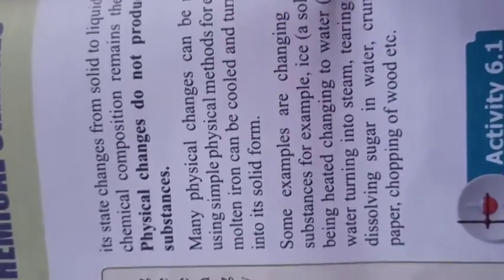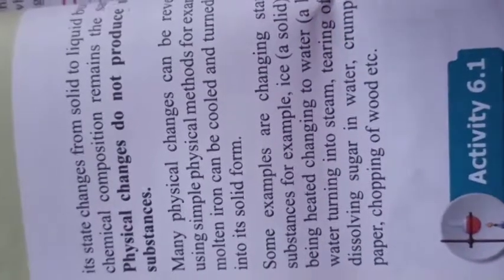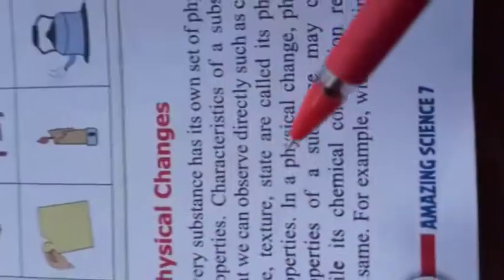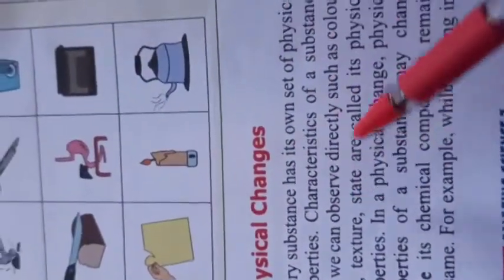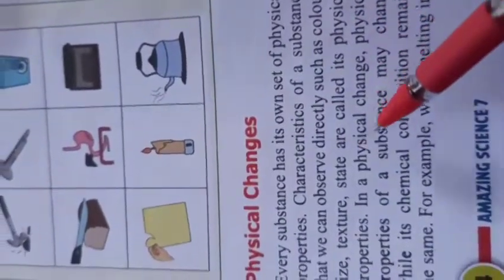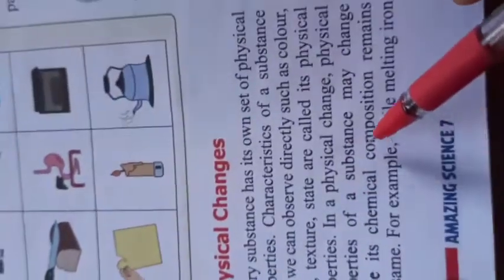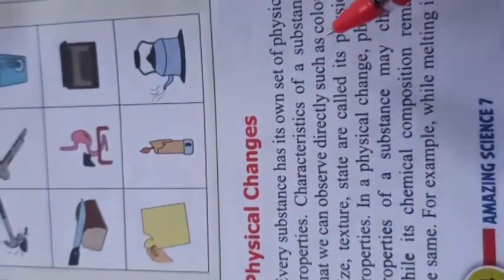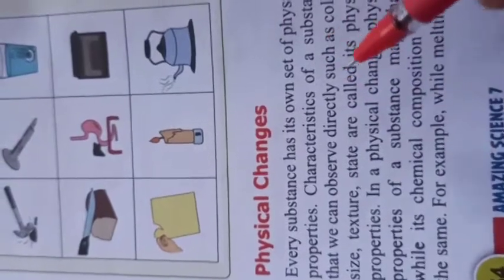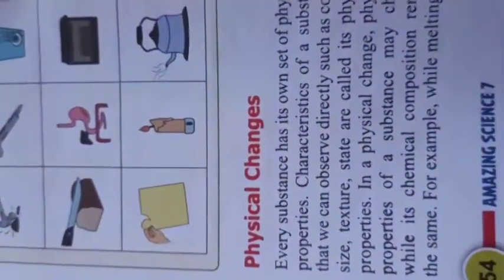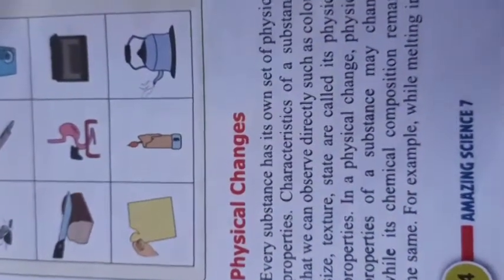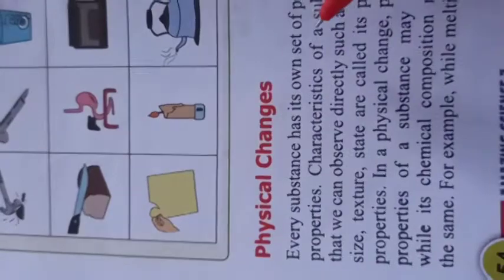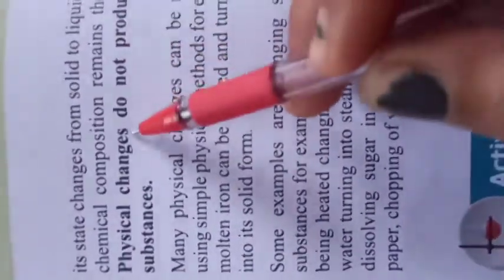Physical changes are those changes in which no new substance is formed or produced. If any new substance is formed in any change then it comes under chemical change. Every object has some physical properties like color, size, texture, and state. If these change but the internal chemical structure remains the same, we say it is a physical change. Their chemical composition remains the same and no new substance is formed - this is the main condition of physical change.